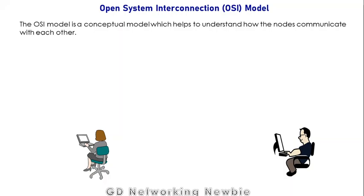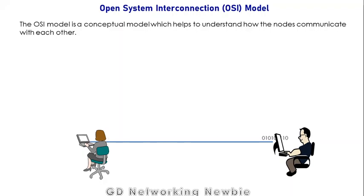Hi everyone. Today we are going to discuss one of the most important topics: the Open System Interconnection model. Before going to the model, let's discuss computer networking. Computer networking, as we know, is a group of computers connected with each other for sharing resources, like files or printers. For instance, if this user wants to send some data to other users, there's a connection between them and they send the data.